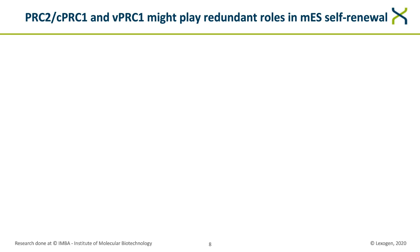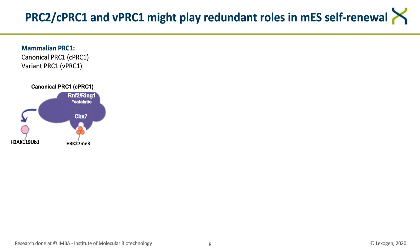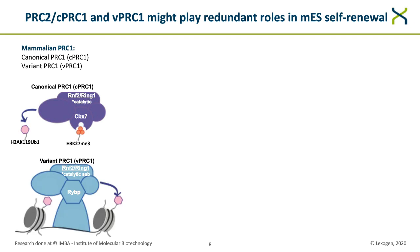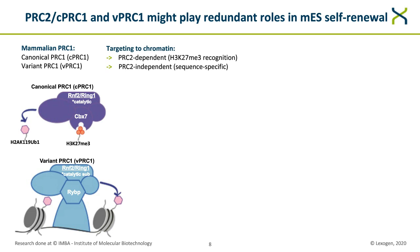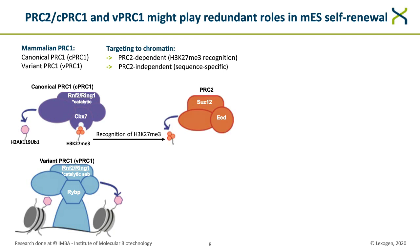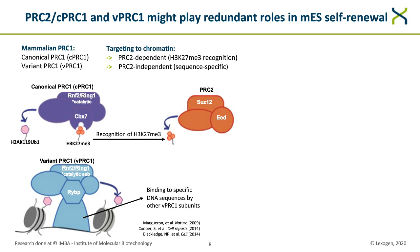In mammalian genomes, Polycomb complexes, particularly the PRC1 complex, are quite diverse. Previous research has identified two major classes: canonical and variant PRC1 complexes, composed of distinct, sometimes mutually exclusive subunits that assemble around the common catalytic core subunits RNF2 and RIN1. Canonical PRC1 finds its targets via recognition of PRC2-deposited H3K27 trimethylation, whereas variant PRC1 is targeted via sequence-specific binding of certain subunits, suggesting these two complexes could work independently to silence target genes.